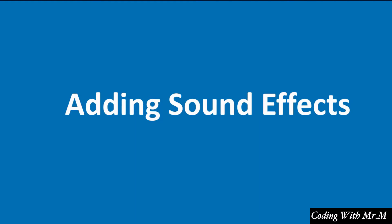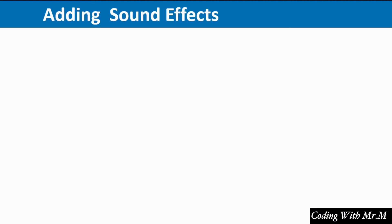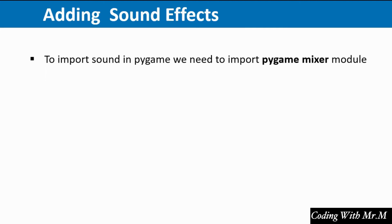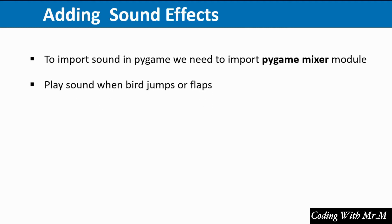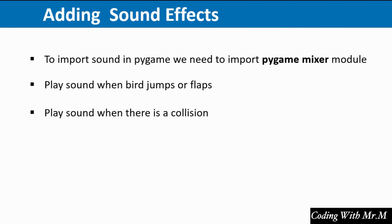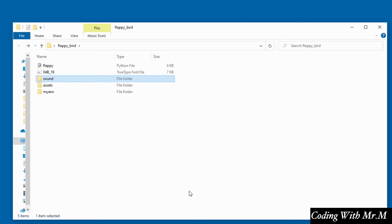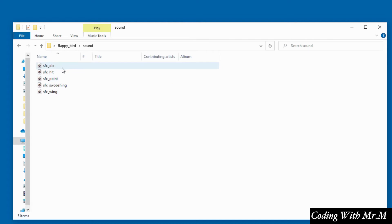Hello and welcome to this video. In this video we are going to add some sound effects to the game. To import sound in Pygame we need the Pygame mixer module. We want to play sounds when certain activities occur — for example when the bird jumps or flaps, when there is a collision with a pipe, and when the game score is updated. The sound files are located in my main project directory inside a directory called sound.